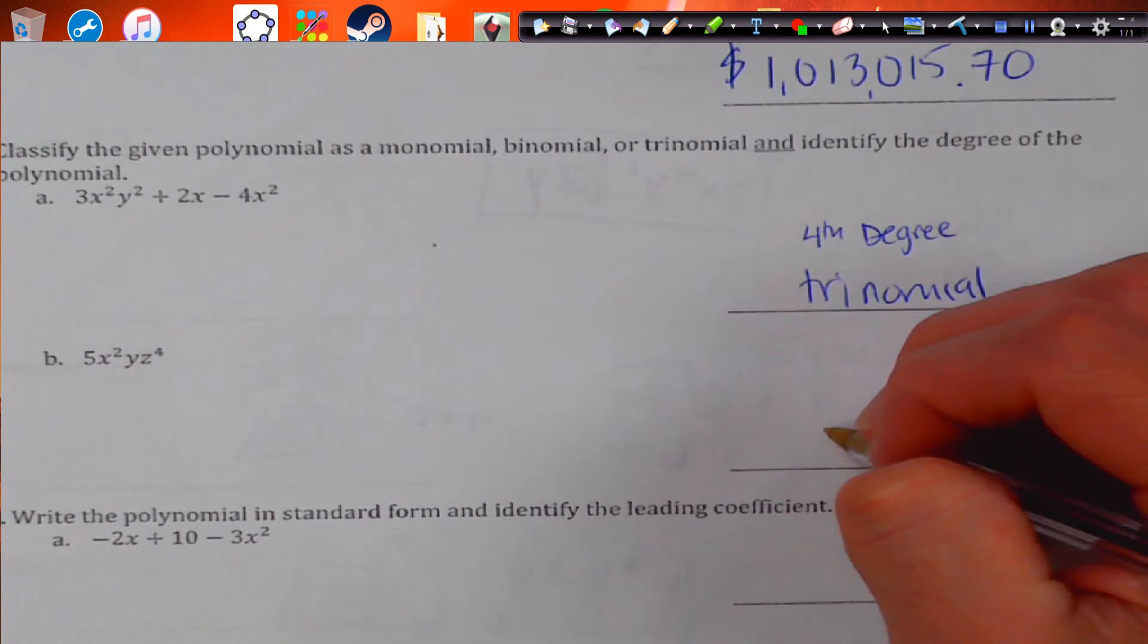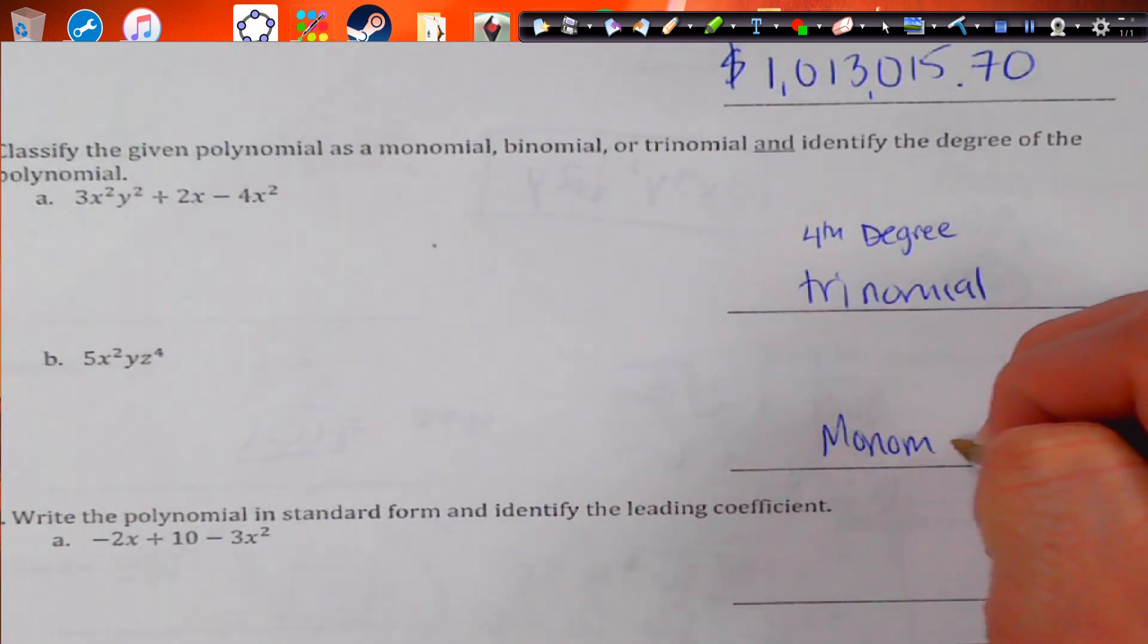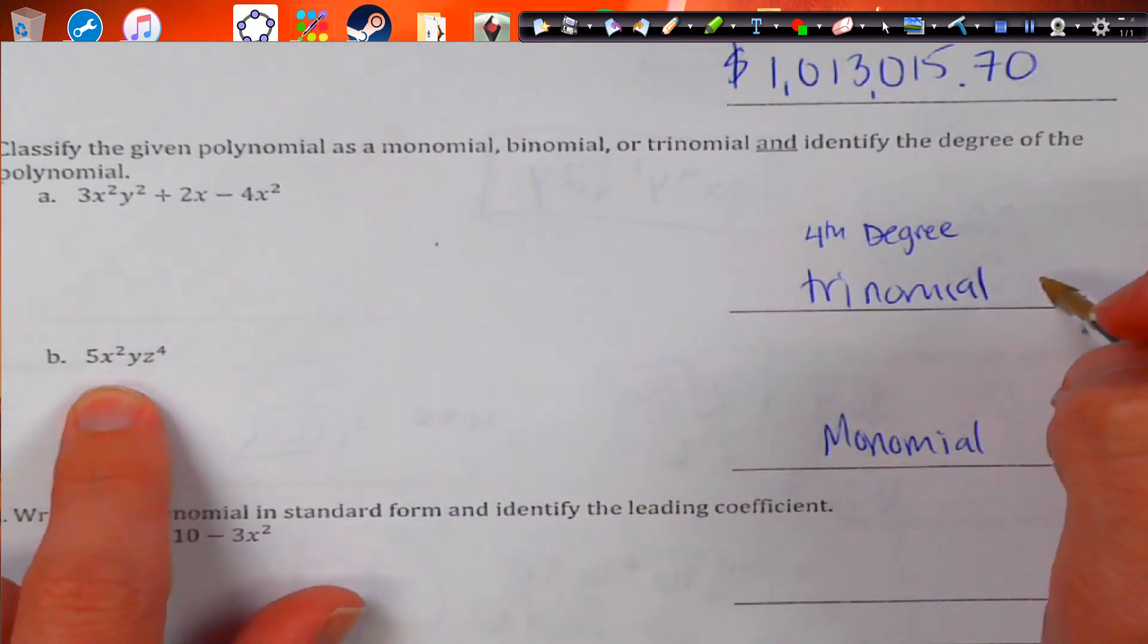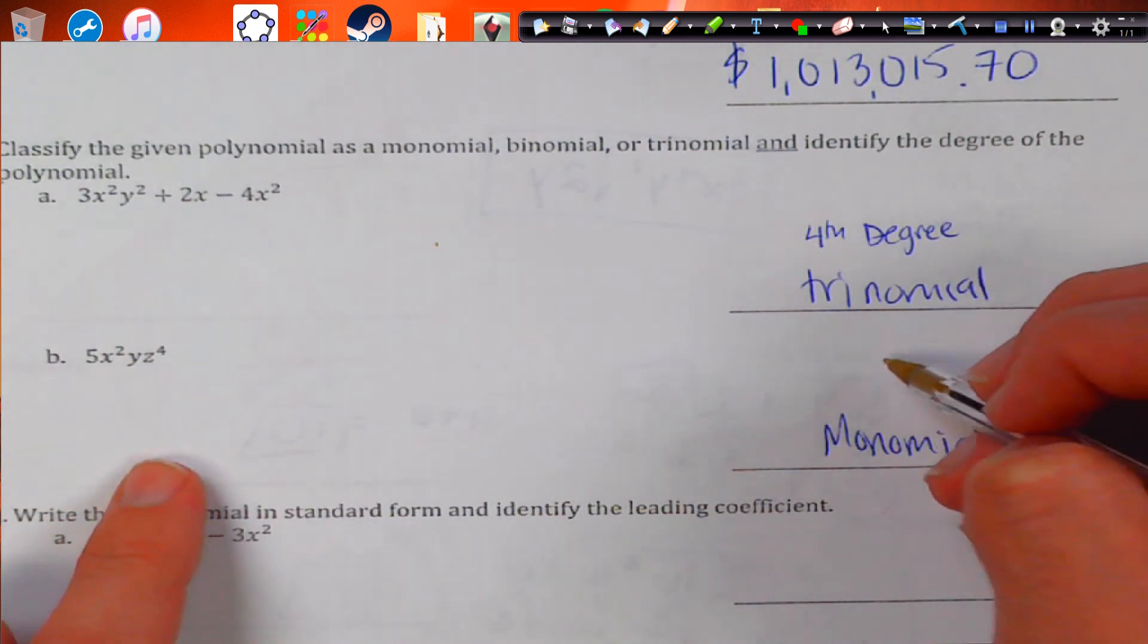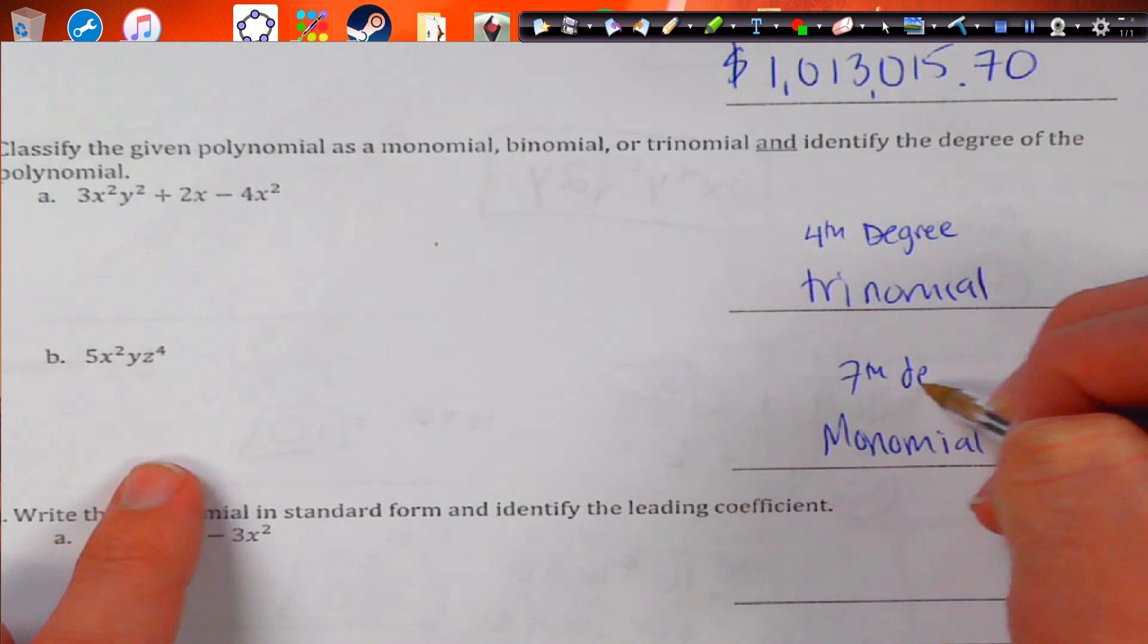This one's a monomial. It's only one term. And it has 2, 1y, and 4z, so it's 2 plus 1 plus 4. So that's going to be 7th degree monomial.